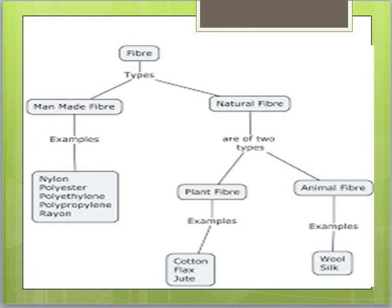Man-made means synthetic, which is synthesized by chemicals. Nylon, polyester, polyethylene, polypropylene, and rayon are some examples. Natural fibers can be plant fibers or animal fibers. Plant fibers are those obtained from plant products or plant parts, and animal fibers come from animal sources such as their skin or hair.